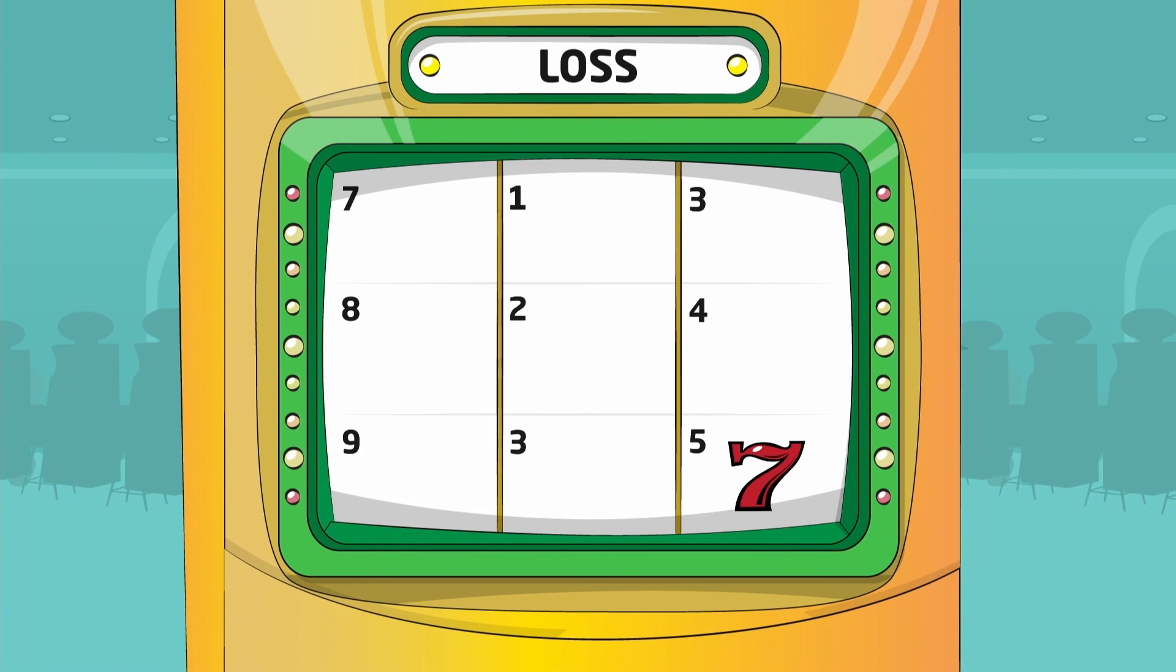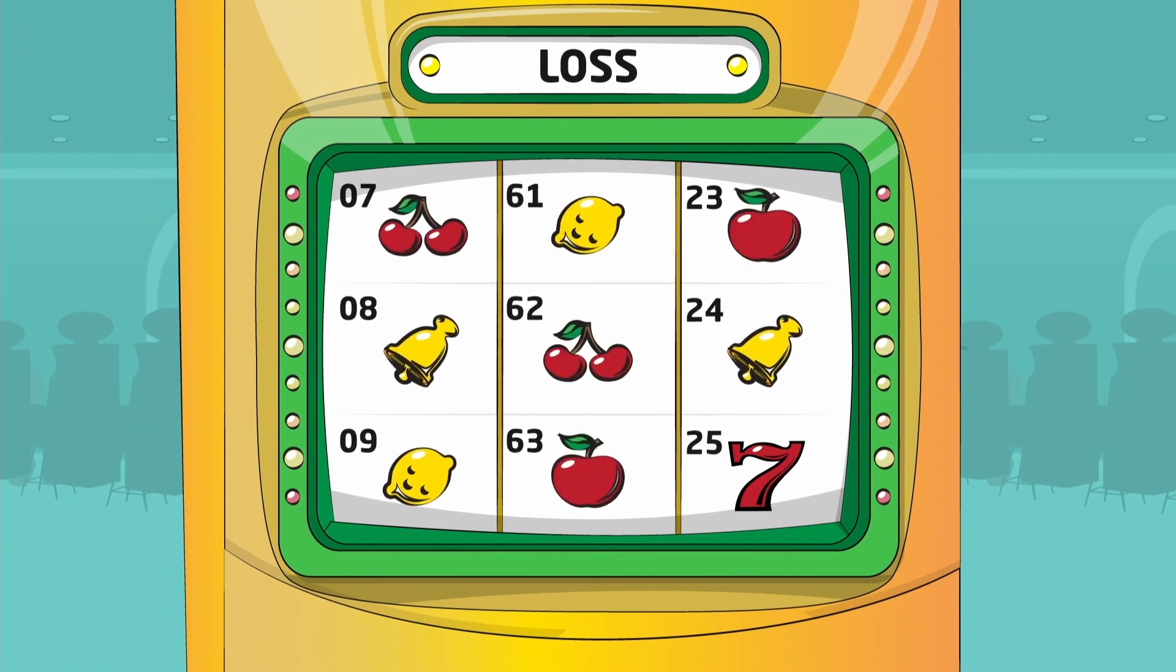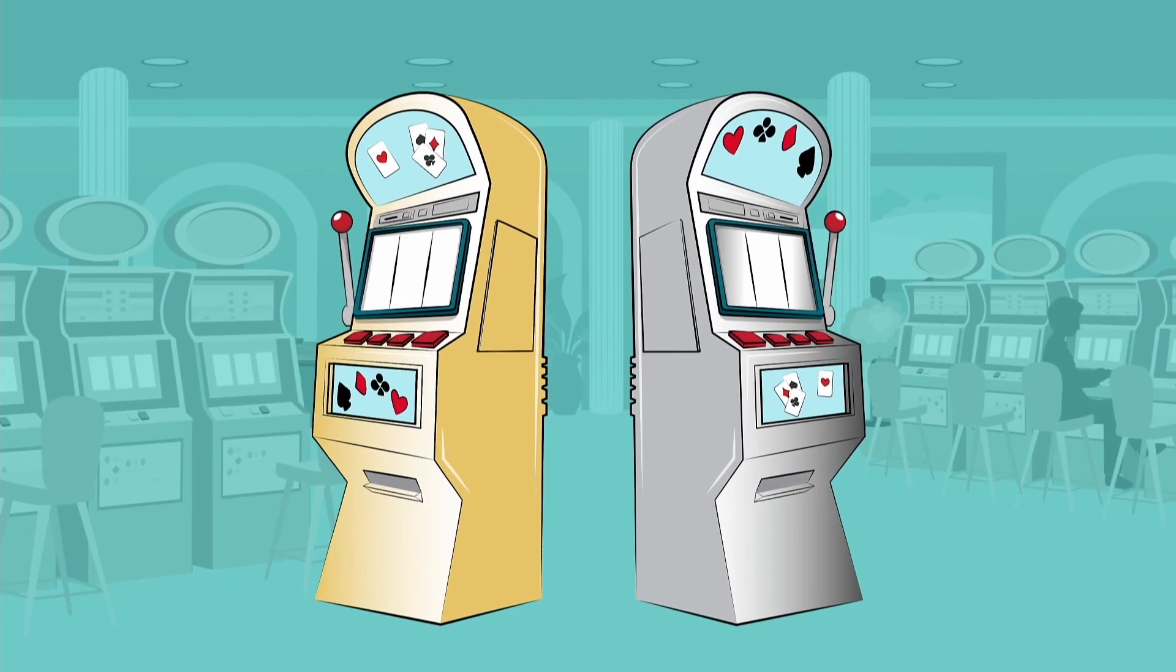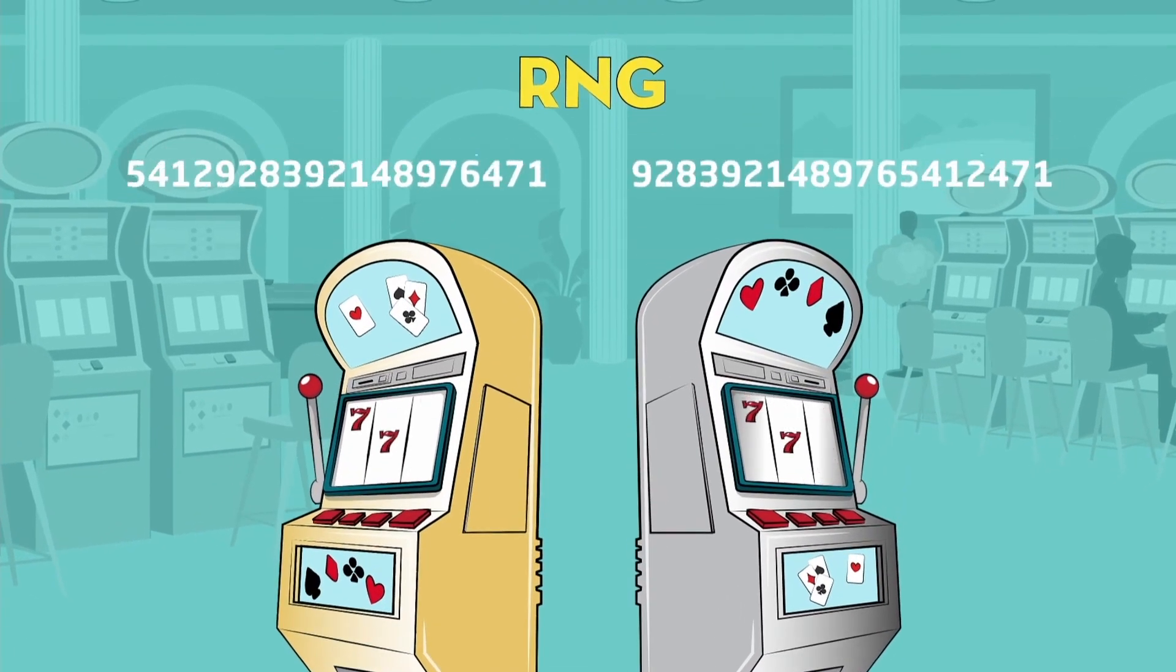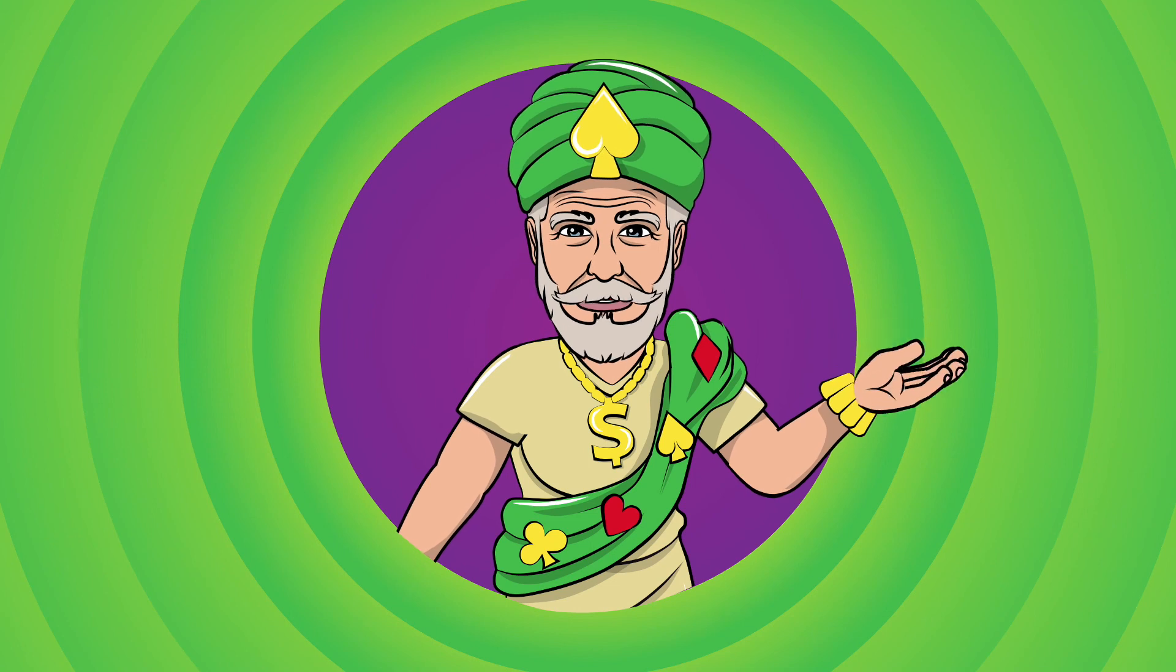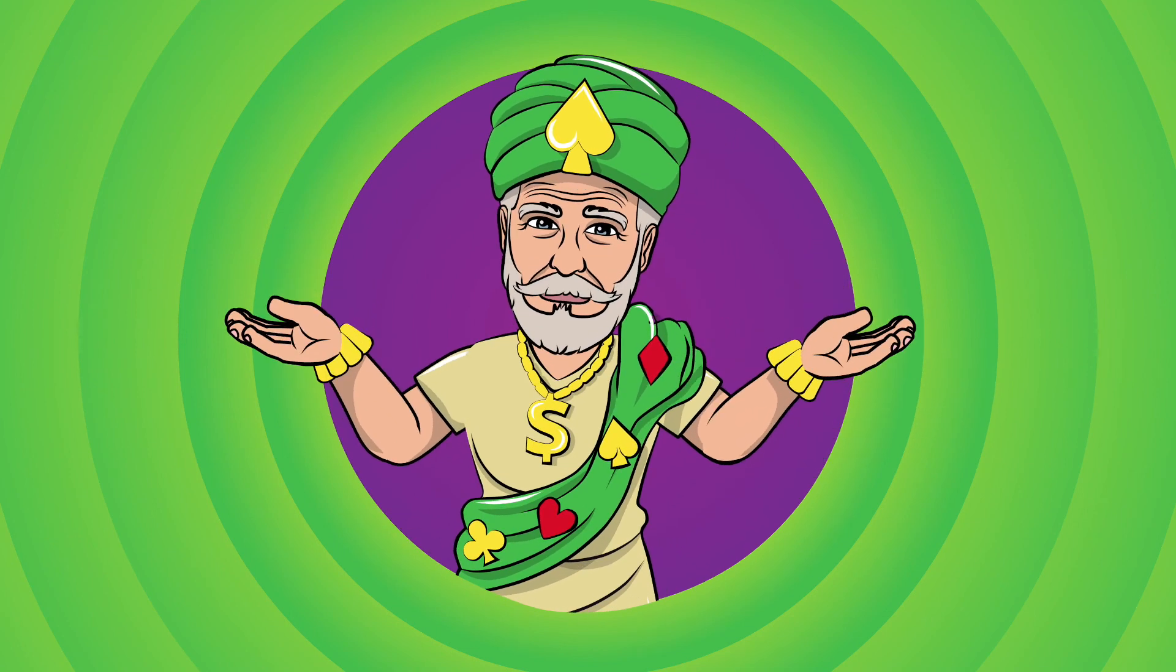In reality, slot machines are more complicated, with a large number of various symbols on each reel, and special features such as free spins or other kinds of bonus rounds. But this doesn't change the fact that the generated random number is the only thing influencing the results. In our made-up slot machine, every time the RNG returns a number ending in 471, the results are the same. Subscribe to our channel for more educational videos about online casinos and casino games.